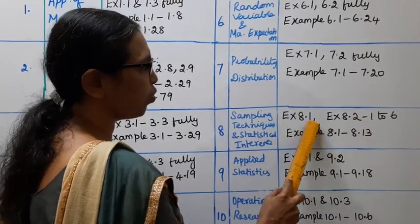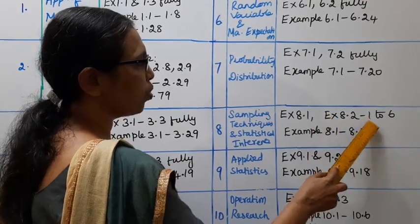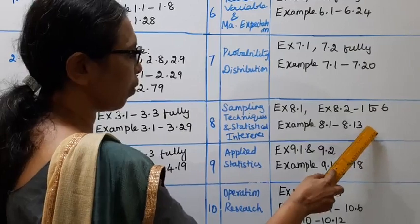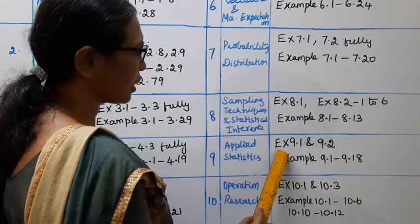Eighth chapter: Sampling Techniques and Statistical Inference. Exercise 8.1 fully, Exercise 8.2 questions 1 to 6. Example 8.1 to 8.13.